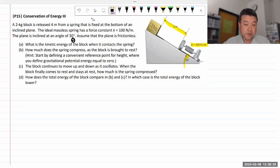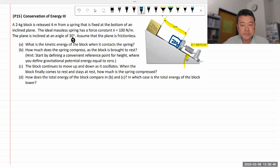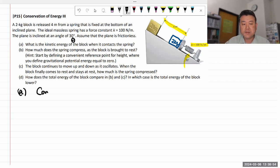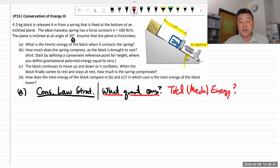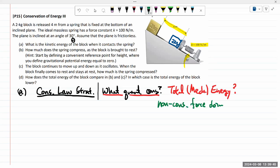It asks: what is the kinetic energy of the block when it contacts the spring? The block travels four meters down to contact the spring. When you suspect you can use the conservation law strategy, the first question you should answer is: what quantity is conserved? Right now it's easy — the only quantity we've covered that could be conserved is the total mechanical energy. Once you suspect that, you need to ask: are there non-conservative forces doing net work?